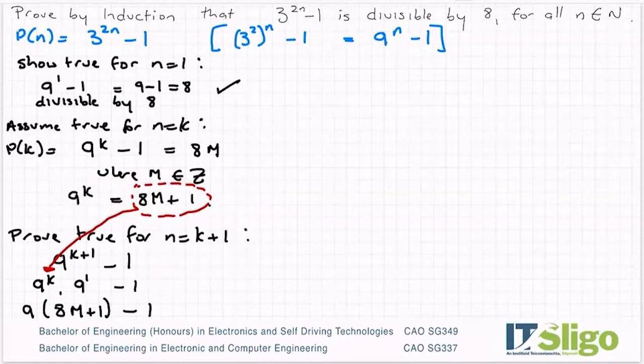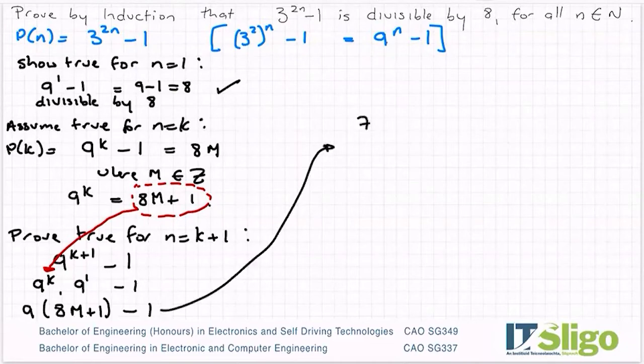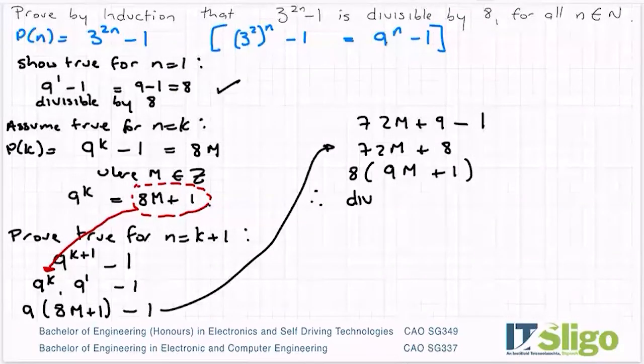And for the divisibility ones, I made up this letter m to stand for the fact that it would be divisible by 8. So let's multiply this out. I get 9 times 8 is 72m plus 9 minus 1, or 72m + 8. I'm trying to show that it's divisible by 8, so I'm going to factor out the 8. Therefore divisible by 8.